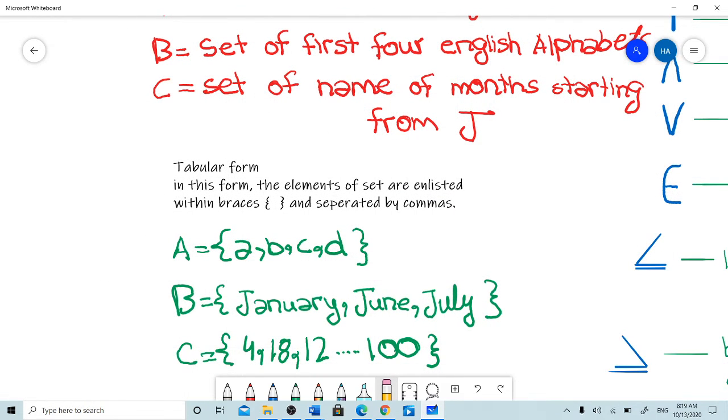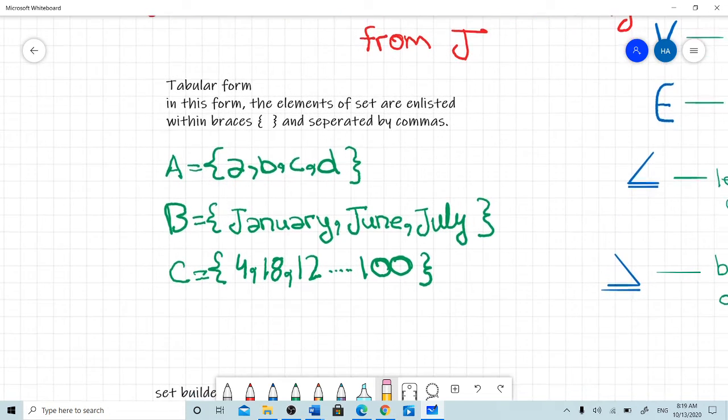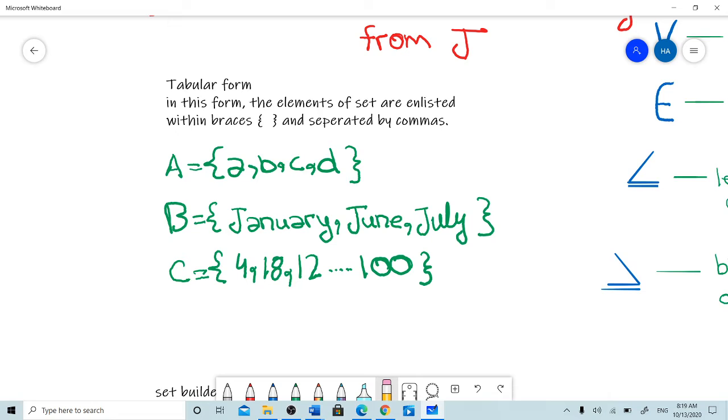Tabular form: In this form, the elements of a set are enlisted within braces and separated by commas. For example: set A equals {a, b, c, d}, set B equals {January, June, July}, set C equals {4, 18, 12...100}.